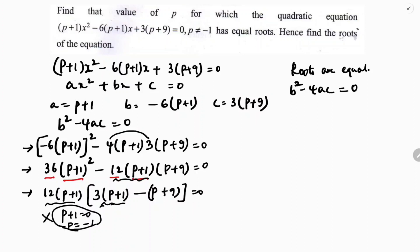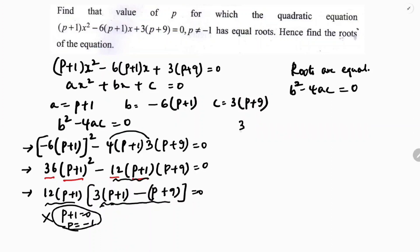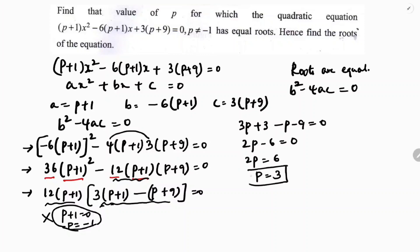Simplifying the bracket: 3(p+1) - (p+9) = 3p + 3 - p - 9 = 2p - 6 = 0. Therefore 2p = 6, so p = 3.